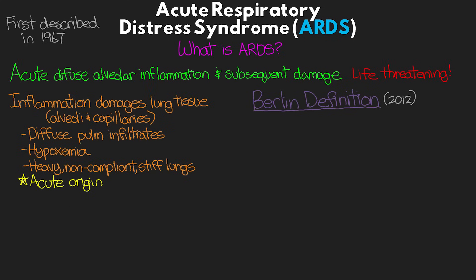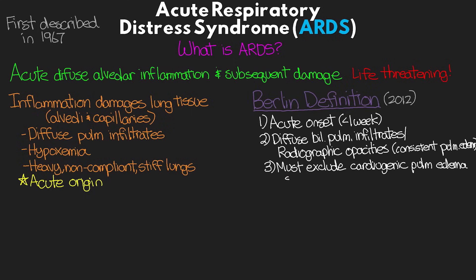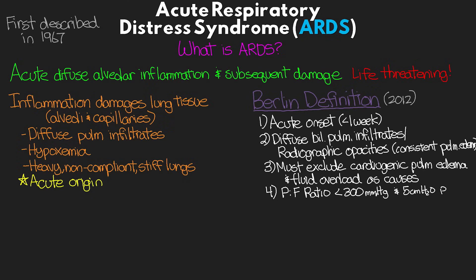There are four criteria to meet the Berlin definition of ARDS. First, acute onset — one week or less. Second, diffuse bilateral pulmonary infiltrates, or radiographic opacities consistent with pulmonary edema. Third, we must exclude cardiogenic pulmonary edema and fluid overload as the cause. And fourth, our PaO2 to FiO2 ratio — the PF ratio — being less than 300 mmHg, with at least 5 centimeters of PEEP, CPAP, or EPAP in place.